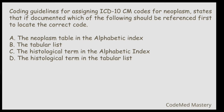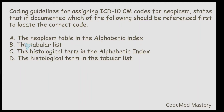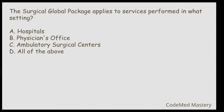Next question: Coding guidelines for assigning ICD-10-CM codes for neoplasm state that if documented, which of the following should be referenced first to locate the correct code? Option A: the neoplasm table in the alphabetic index. Option B: tabular list. Option C: histological term in the alphabetic index. Option D: histological term in the tabular list. The right answer is option A — the neoplasm table in the alphabetic index. If a neoplasm is documented, first check the neoplasm table in the alphabetic index.